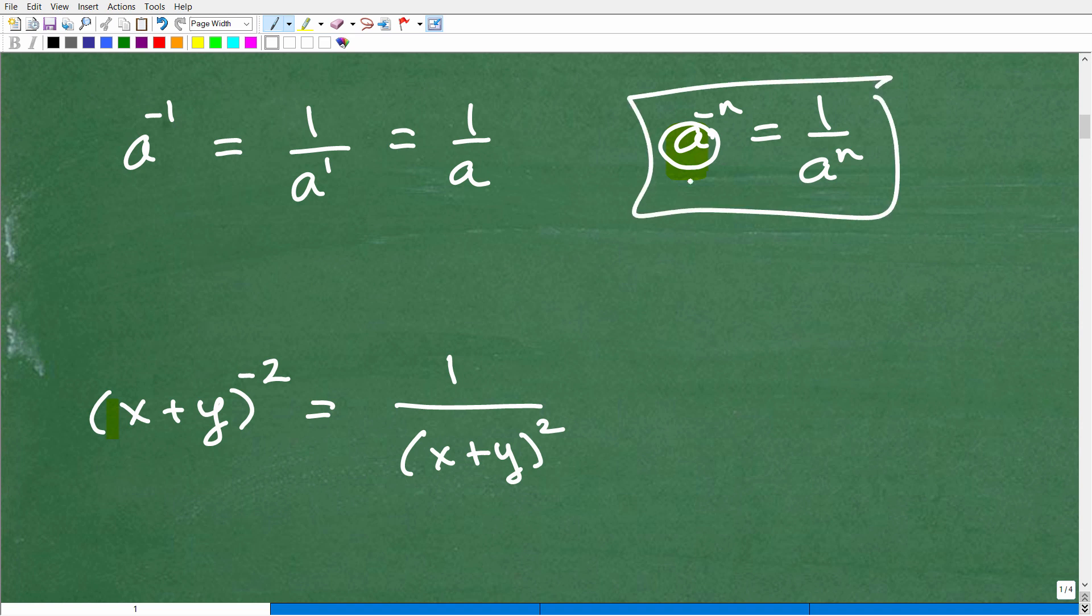So again, you can kind of study that pattern. So what happens is when we have x plus y to negative 2, we're going to put this down in the denominator. I want you to start thinking of these things as fractions. So x plus y to negative 2 over 1.